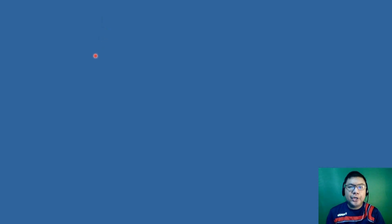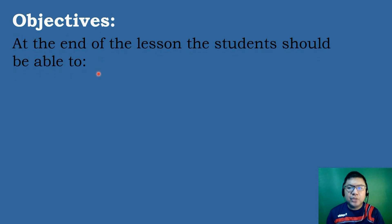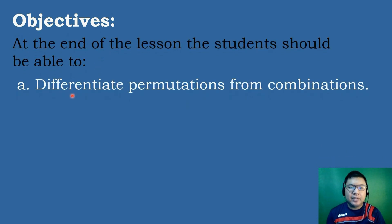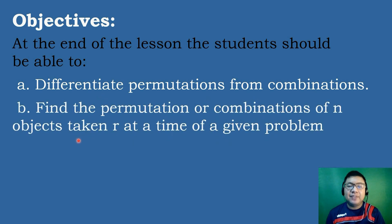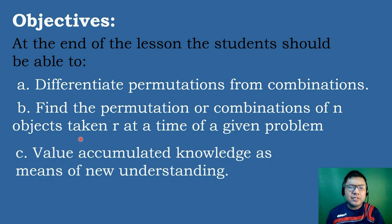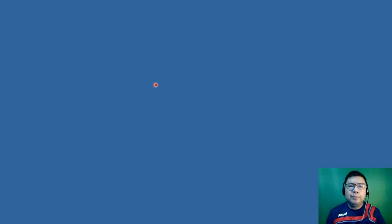These are the following objectives in today's topic. Letter A, differentiate permutations from combinations. Letter B, find the permutations or combinations of N objects taken R at a time of a given problem. And Letter C, value accumulated knowledge as means of new understanding.